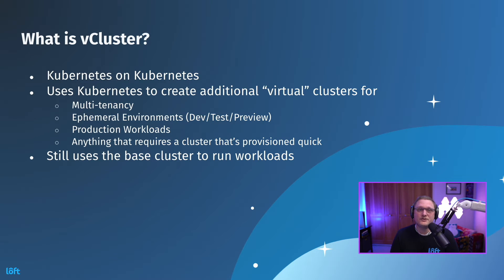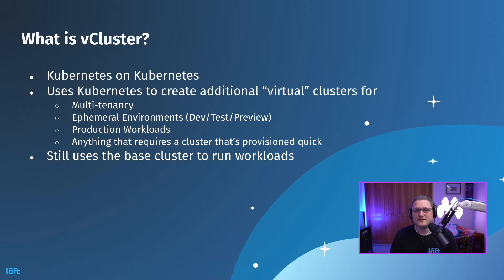What is vCluster? vCluster is Kubernetes on Kubernetes. It uses Kubernetes to create additional virtual clusters for multi-tenancy, ephemeral environments like dev/test/preview, production workloads — anything that requires a cluster provisioned quickly. It still uses the base cluster to run the workloads. It stands up a pod within a namespace in Kubernetes running another version of Kubernetes — K3S, K8s — accessing that new API endpoint and creating resources there, but they still run on the base cluster.